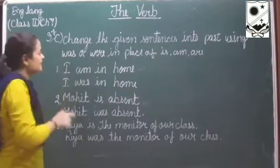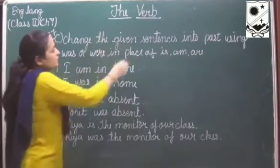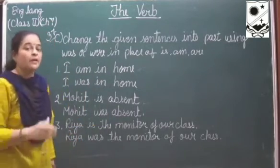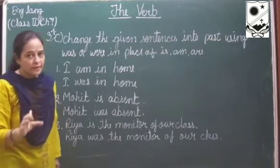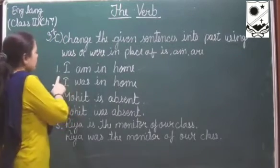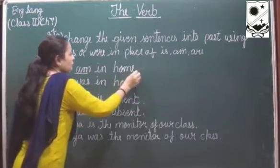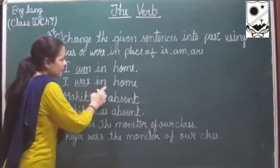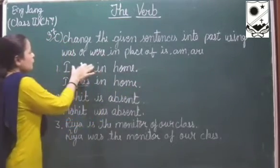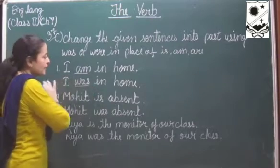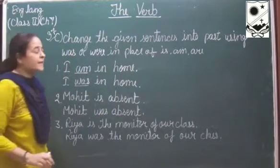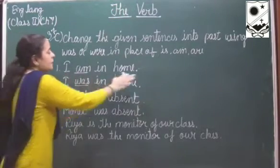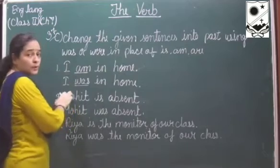Question C: change the given sentences into past, using was or were in place of is or am. First: I am in home - we remove am and write was, so I was in home. By using was, we have converted the present sentence into a past one.